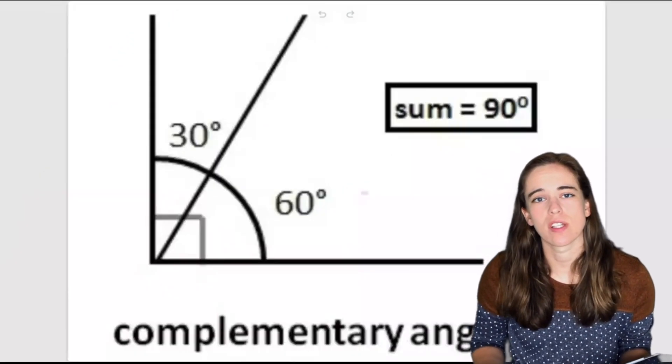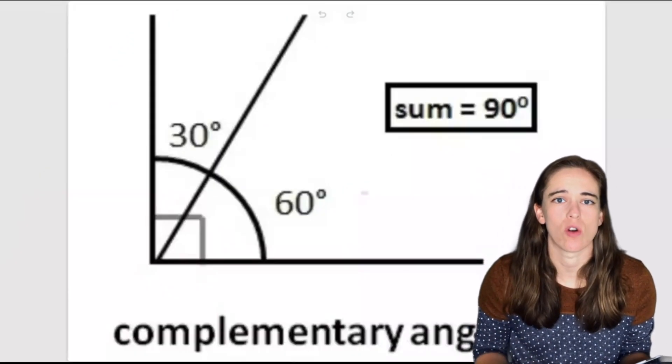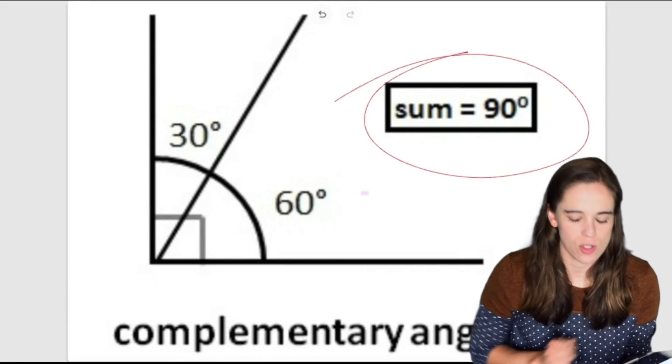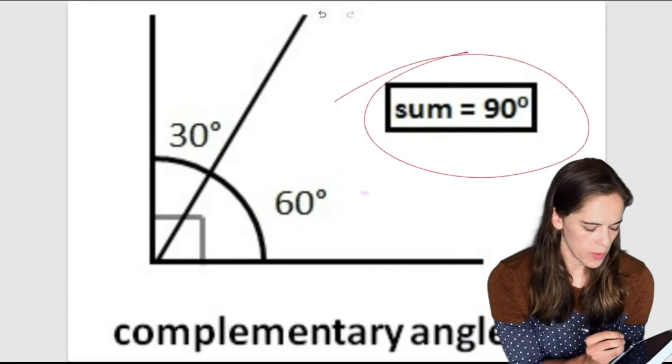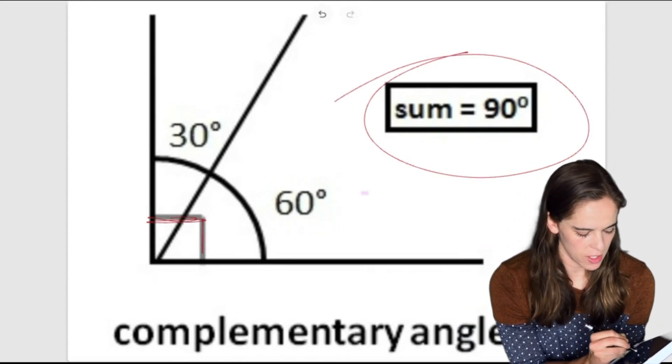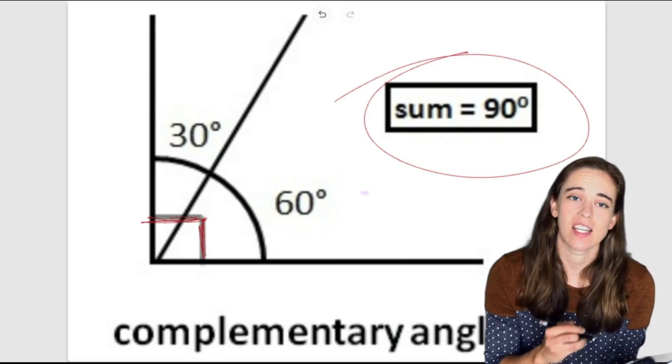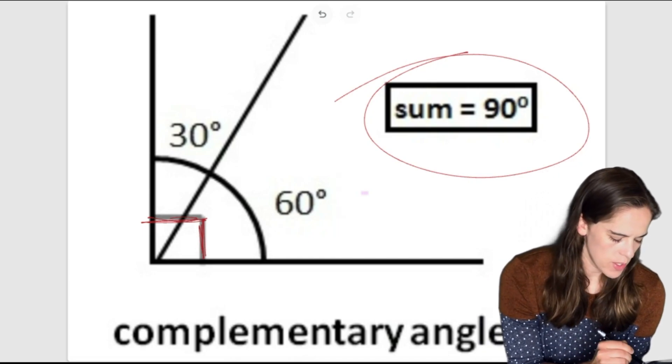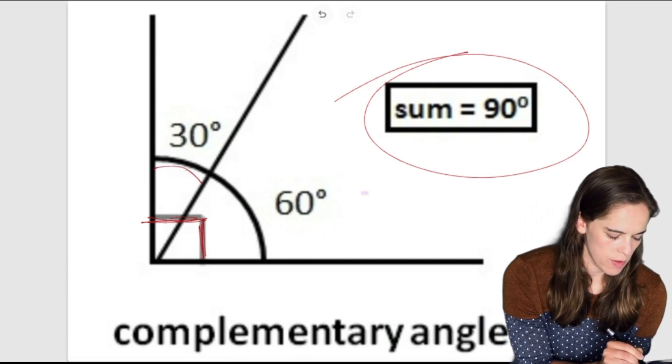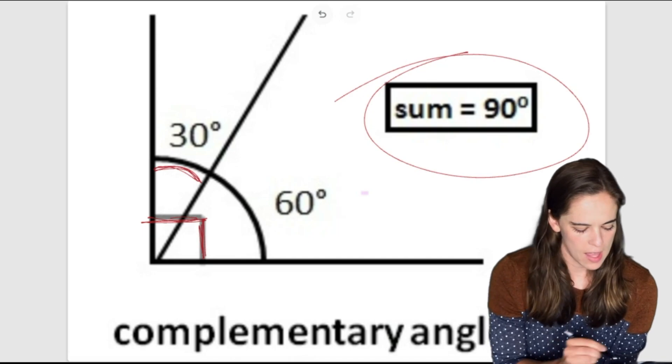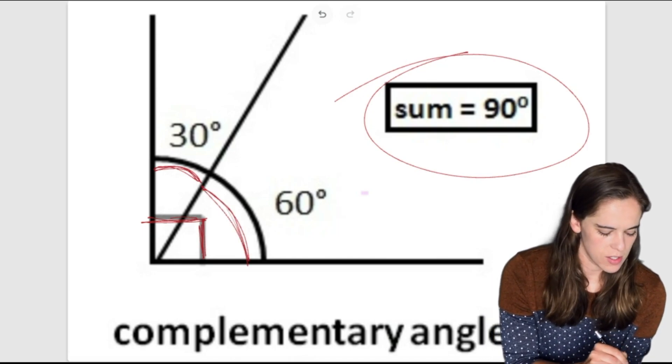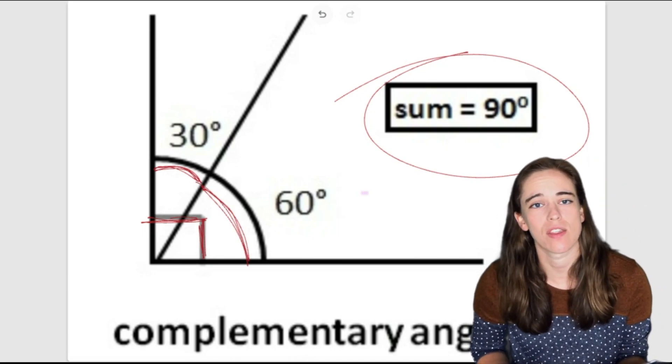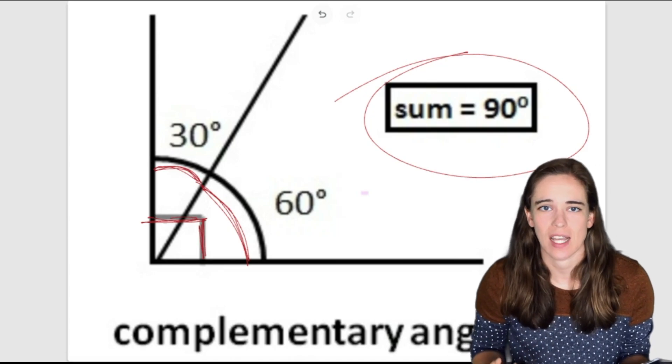Our second angle relationship is a complementary angle. Complementary angles add to 90 degrees. So here you'll see we have this marking here that square we talked about for a right angle telling us that the entire angle here equals 90 degrees. And then we see that we have two separate angles. So we have a 30 degree angle right here and then we also have a 60 degree angle and when I add those together they add up to 90 degrees.